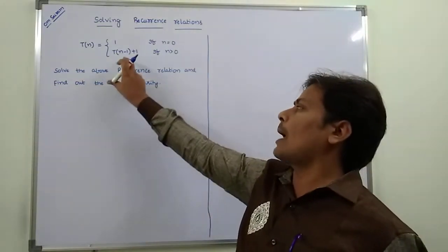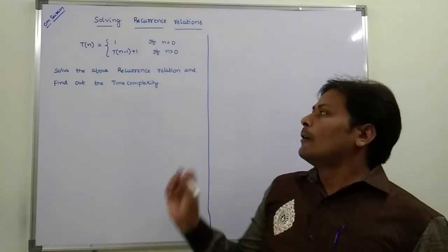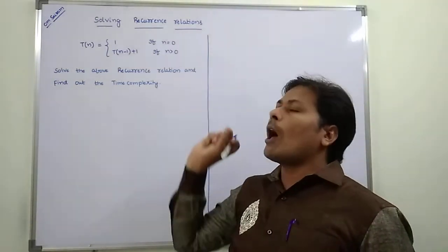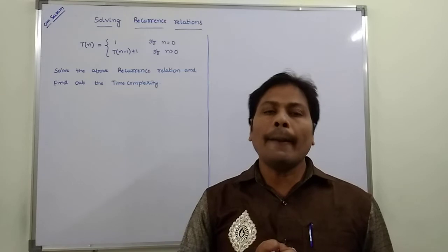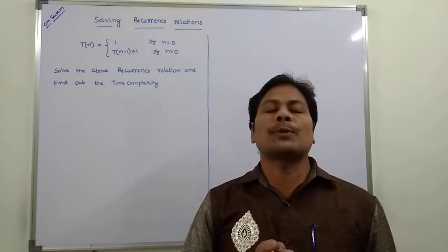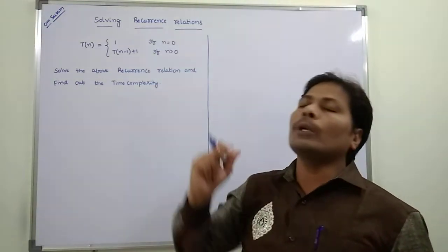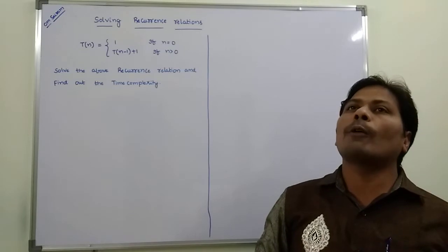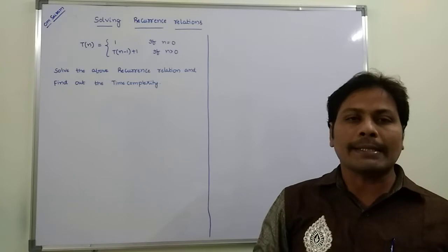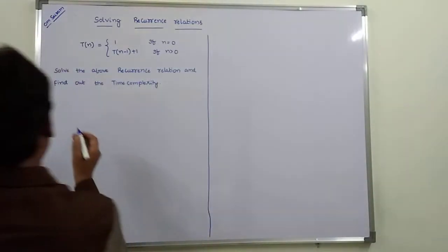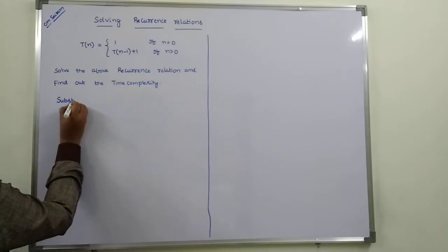Solve this above recurrence relation and find out the time complexity. First of all, to solve this above recurrence relation, we have to use the substitution method. By using this substitution method, we have to solve the above recurrence relation and also find out the time complexity.